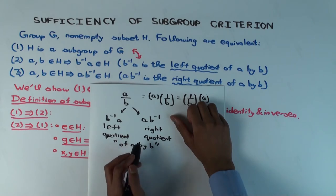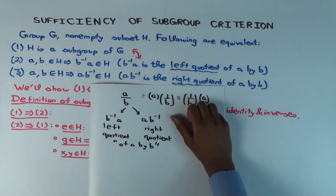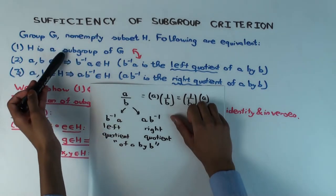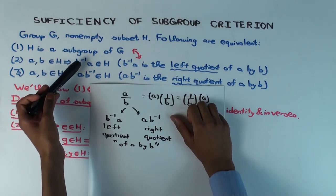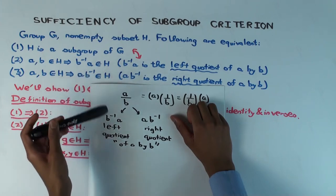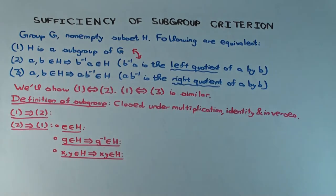The claim is this: if you have a group and a non-empty subset, then if the subset is a subgroup it is closed under taking both left and right quotients. Conversely, if it's closed under taking left quotients it's a subgroup, and if it's closed under taking right quotients it's a subgroup. So to check something's a subgroup, it's equivalent to checking closure under left quotients — or equivalently right quotients — but it must be non-empty first.